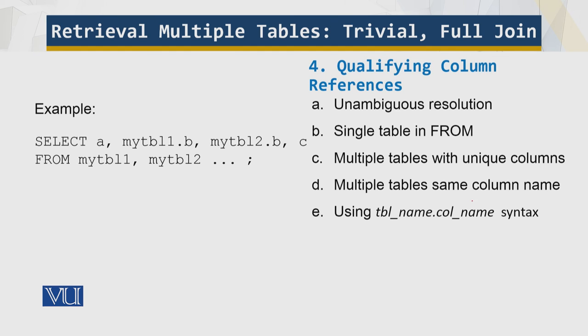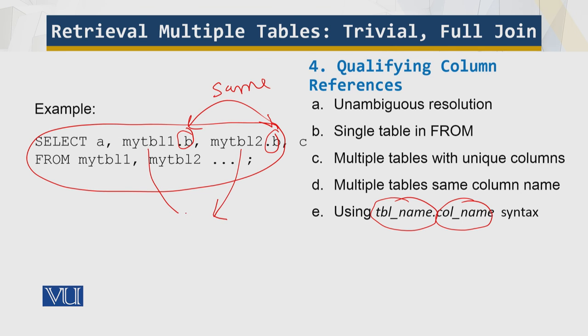Which is given over here, table underscore name column underscore name. This is the syntax. And this is the example over here. So we have this and this, they are same. But because of this and this not same, there is no ambiguity. Things are very clear. Qualifying the column.